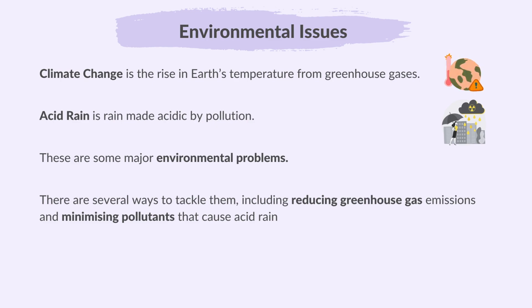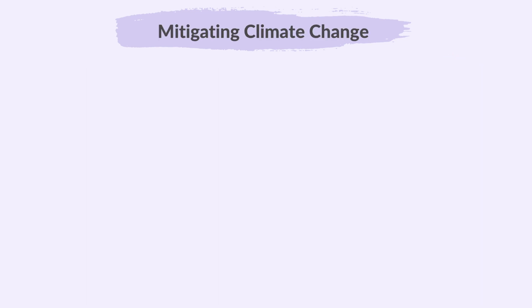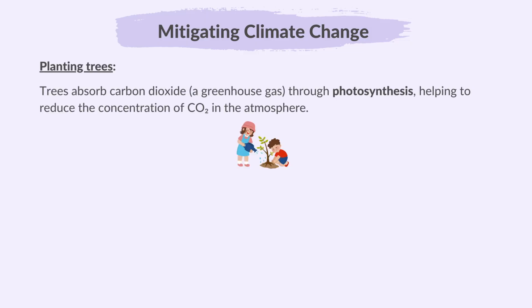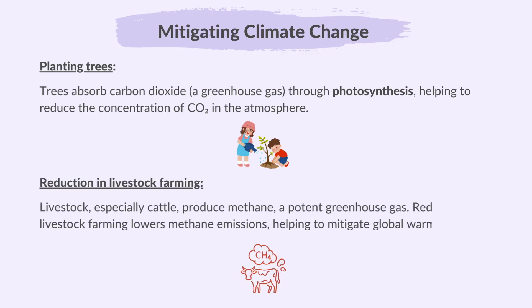Here are some ways to reduce the effects of climate change. Planting trees: trees absorb carbon dioxide, a greenhouse gas, through photosynthesis, helping to reduce the concentration of carbon dioxide in the atmosphere. Reduction in livestock farming: livestock, especially cattle, produce methane, a potent greenhouse gas. Reducing livestock farming lowers methane emissions, helping to mitigate global warming.